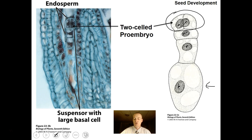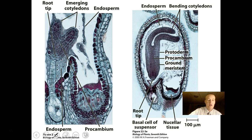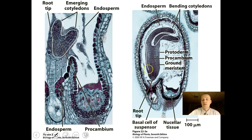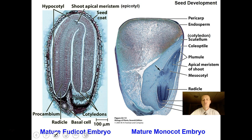At a later stage you have the young cotyledons — these little embryonic leaves — and a little young embryonic root forming. Later the cotyledons get a bit bigger and the root tip grows. It becomes more complex with tissues beginning to form: you can see protoderm, ground meristem, and procambium beginning to form inside the structure.